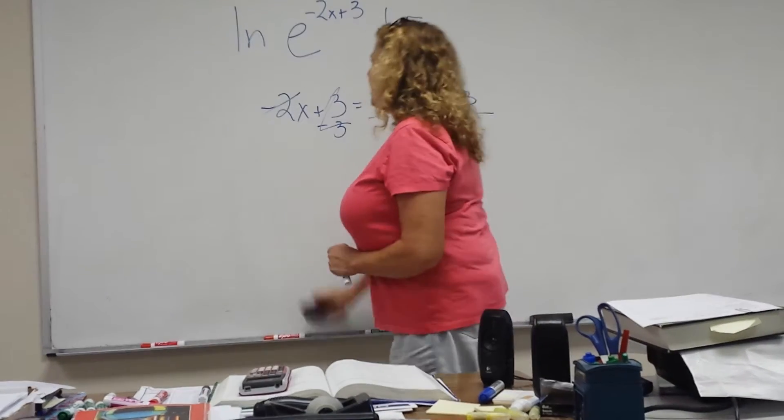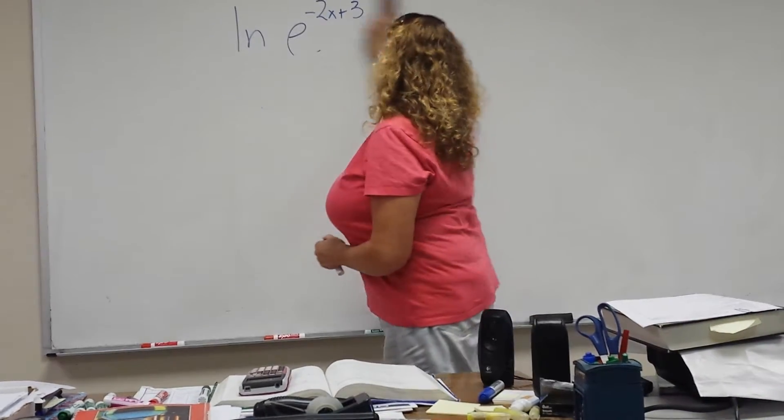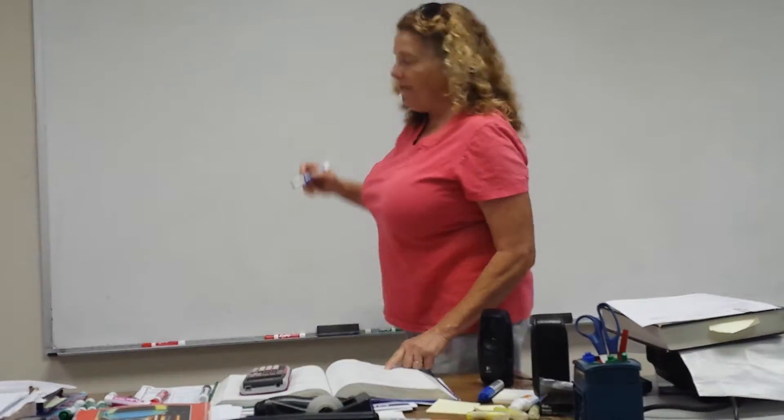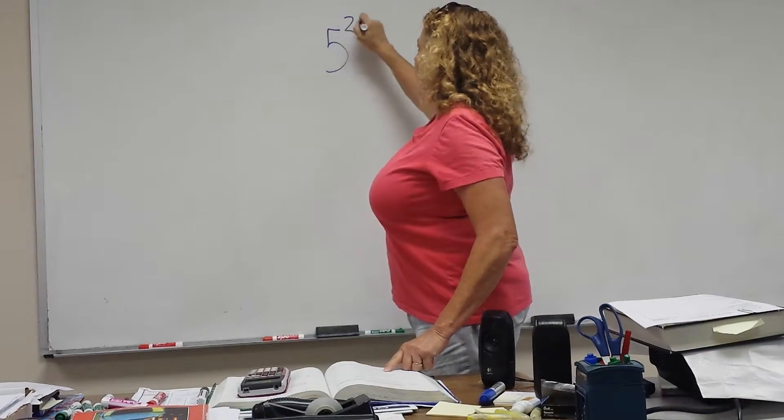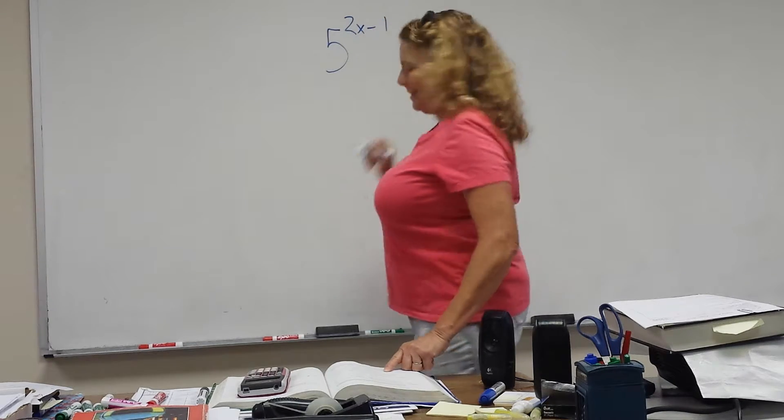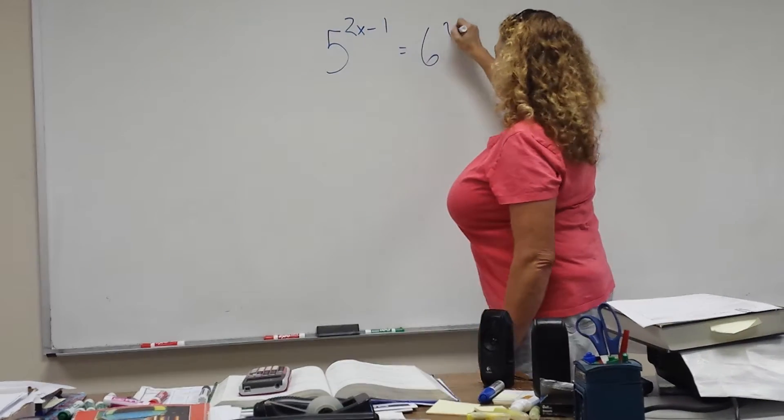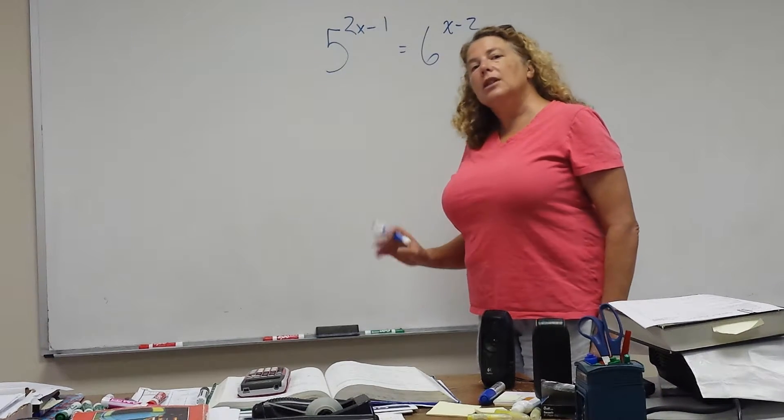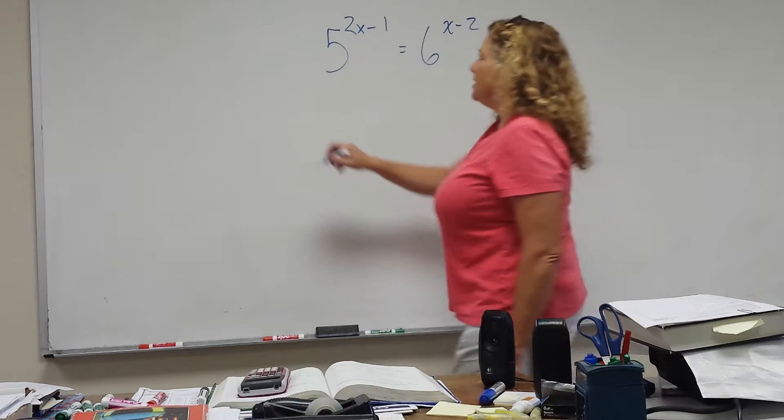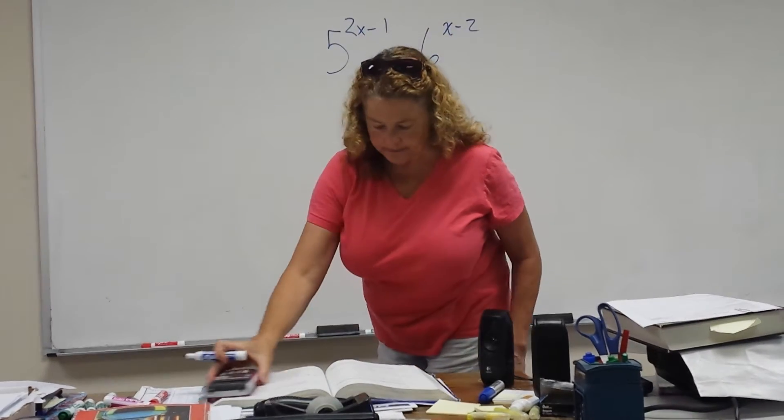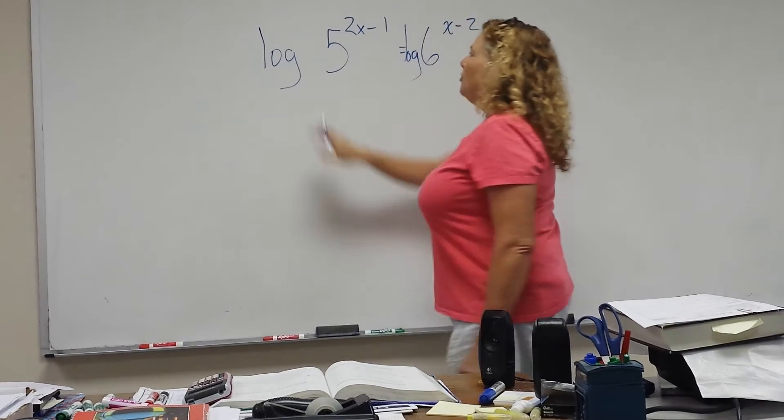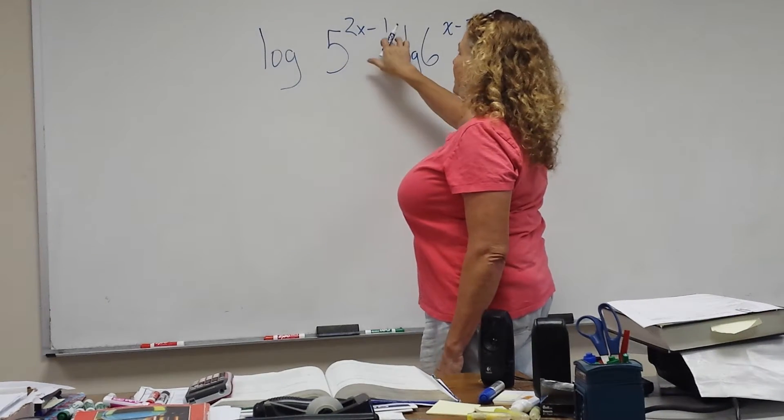What if neither one of them is 10 or e? Let's say we have 5 to the 2x minus 1 equals 6 to the x minus 2. Well, then you have your choice. You can use log or ln. You could say log of both sides.